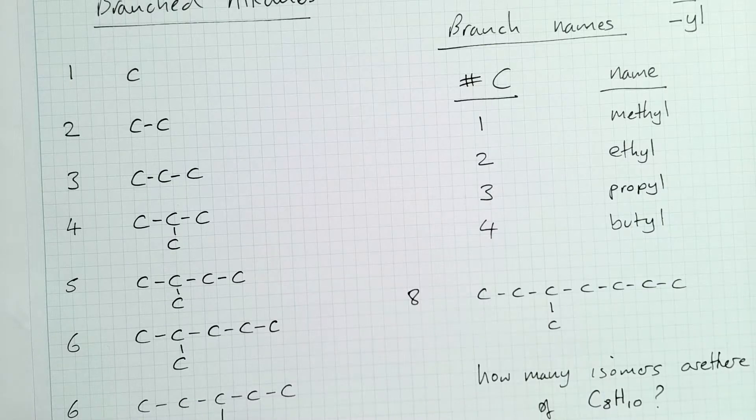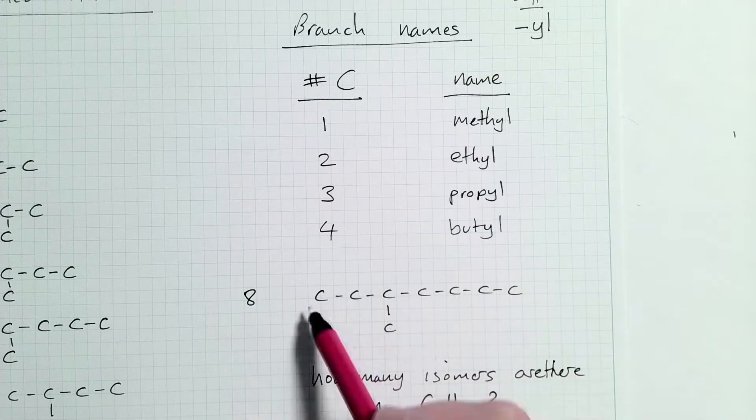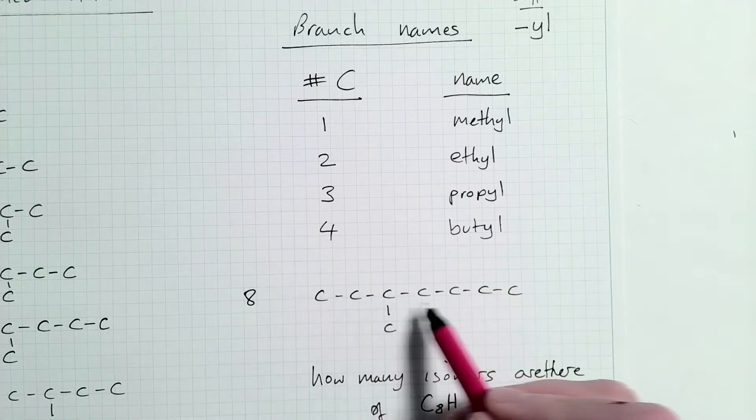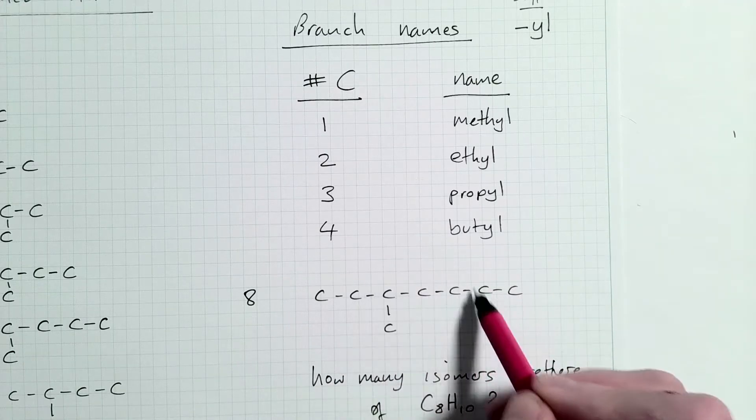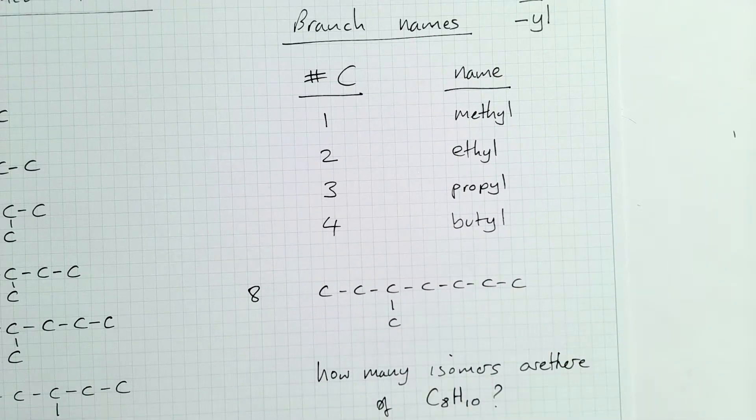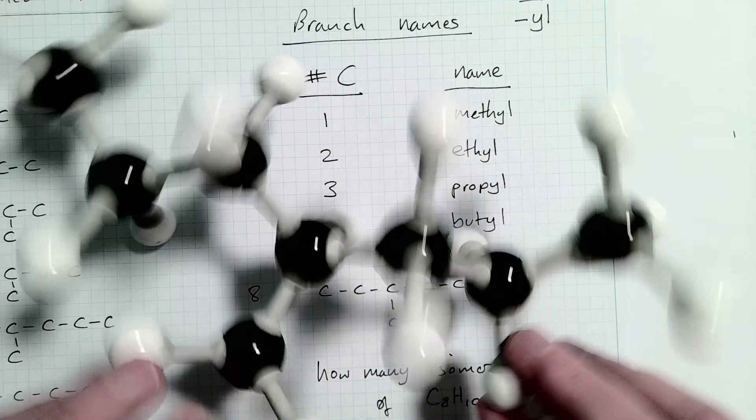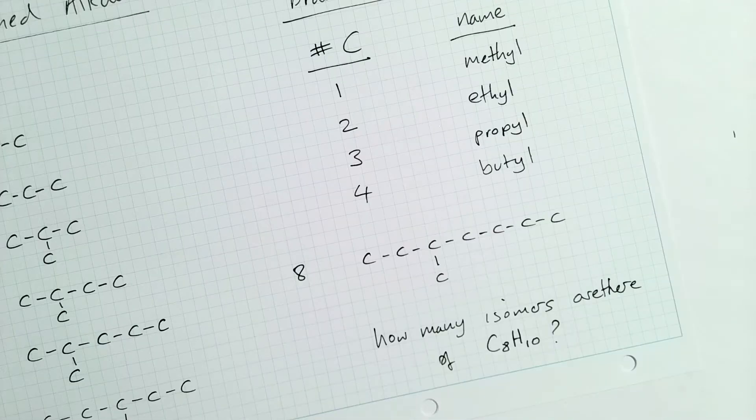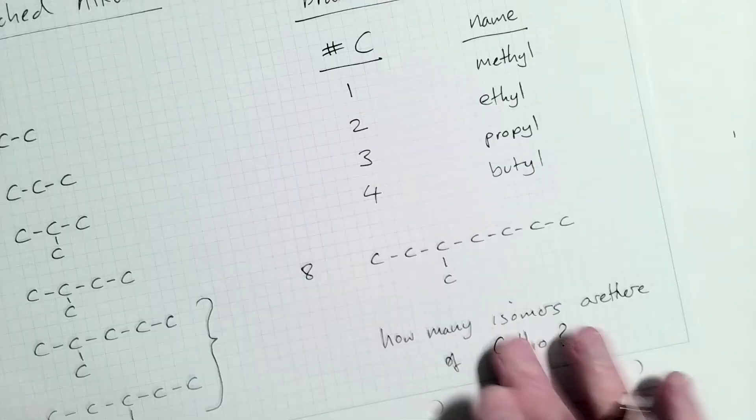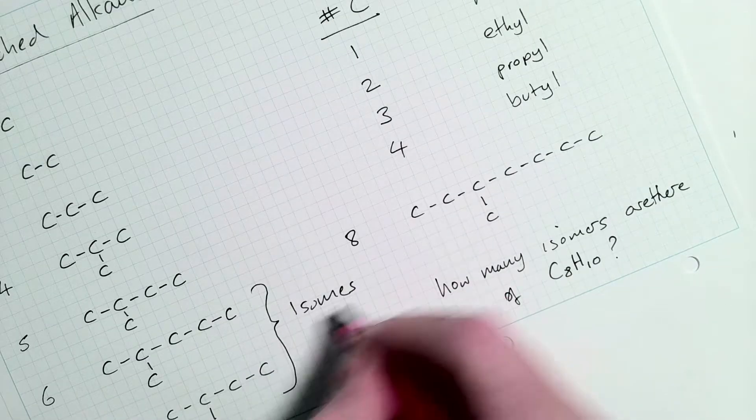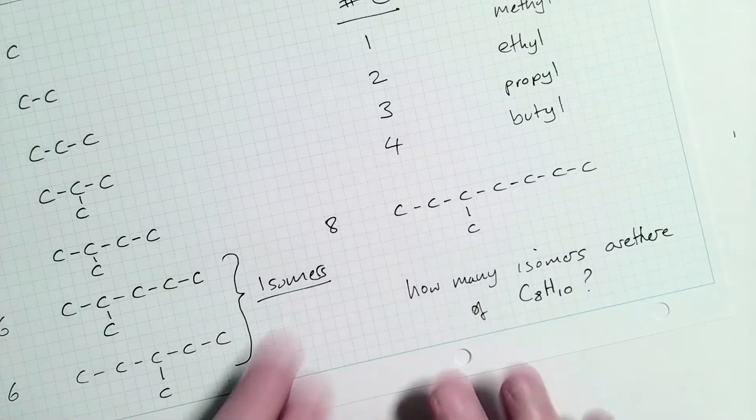All right. Now, we'll come back to naming that in a little minute. Obviously, when we go all the way up to eight carbons, it's possible to have branches going off in different places. And you can make several different types of molecules with your eight carbons. And so it's possible to make several different types. Now, these different types of molecules that you can make are called isomers.